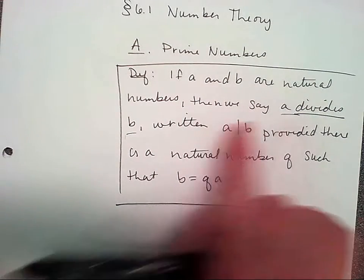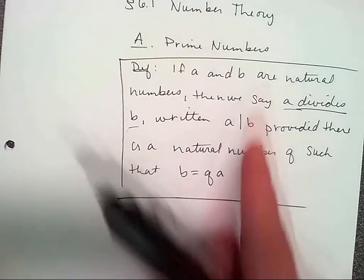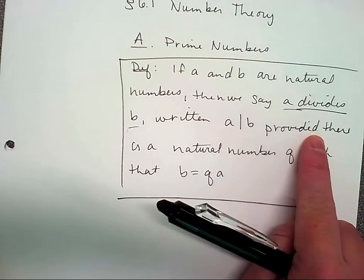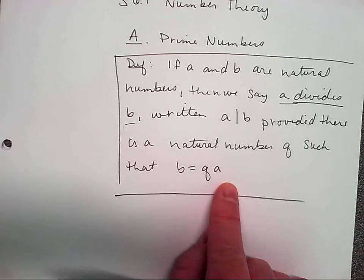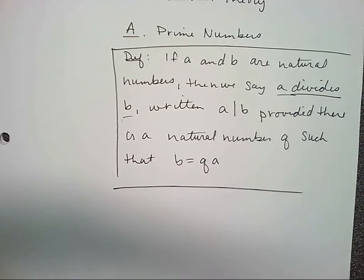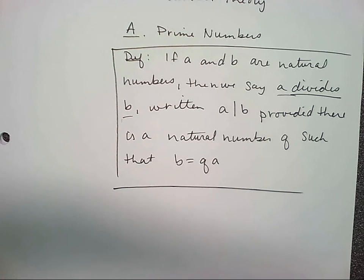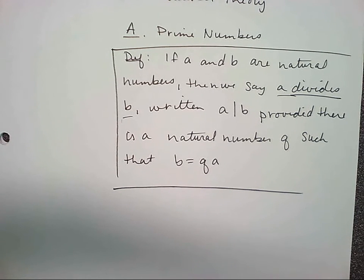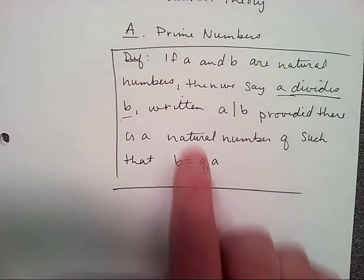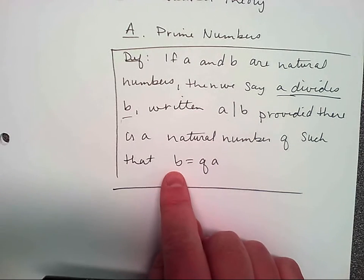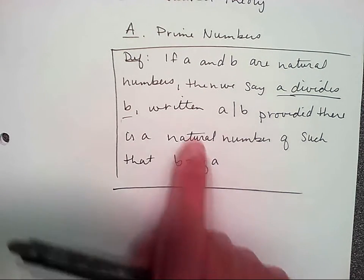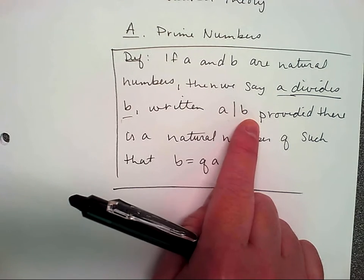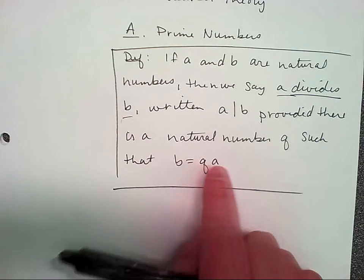We say A divides B, written A line B, provided there is a natural number Q such that B equals QA. One number divides another if you can write that number as that number times something. So like three divides six because I can write six as two times three.